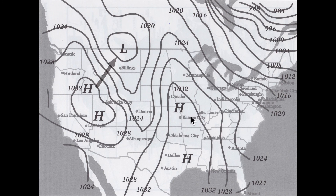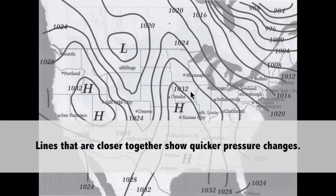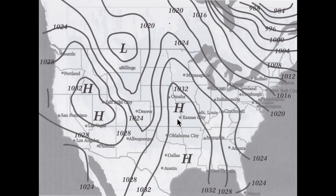So that's essentially how you read a pressure map. Each line represents equal pressure as you follow it, and as you go from one line to the next there is an interval — on this map, four millibars either increasing or decreasing. These are called isobars, and generally speaking, you just look to see where high pressure is and where low pressure is to understand how air is going to move.